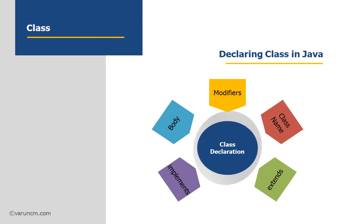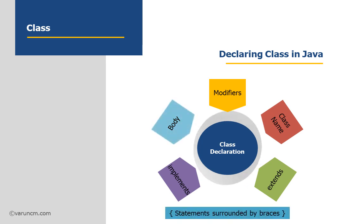The last component present while declaring the class is the body. The body of the class should be surrounded by curly braces — it starts with the curly brace and ends with the curly brace. Whatever is present inside these curly braces forms the body of the class. These are the components which we include while declaring classes.